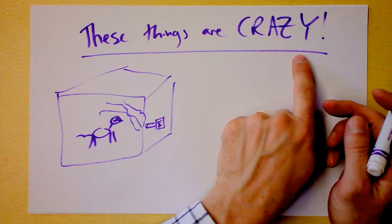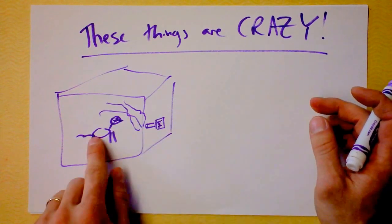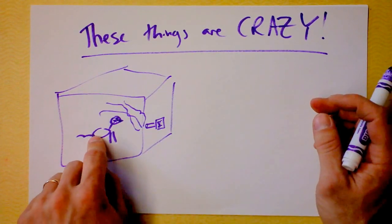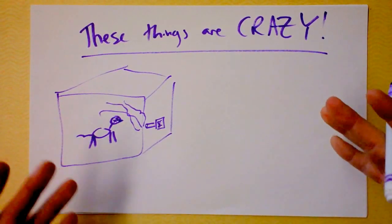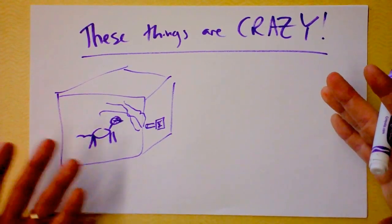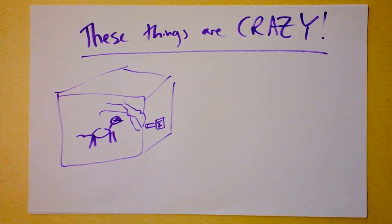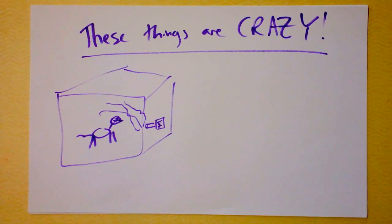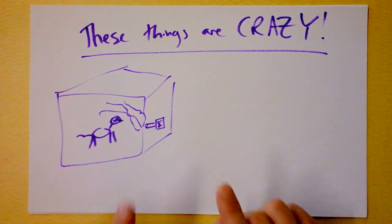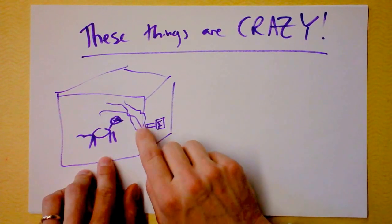So, Schrödinger said, these things are crazy. If I put a cat in a box, it's not like the cat's alive in the box and it's dead in the box at the same time. That's insane, right? And everybody said, yeah that does sound pretty crazy, but ultimately it's true. The cat is both alive and dead.